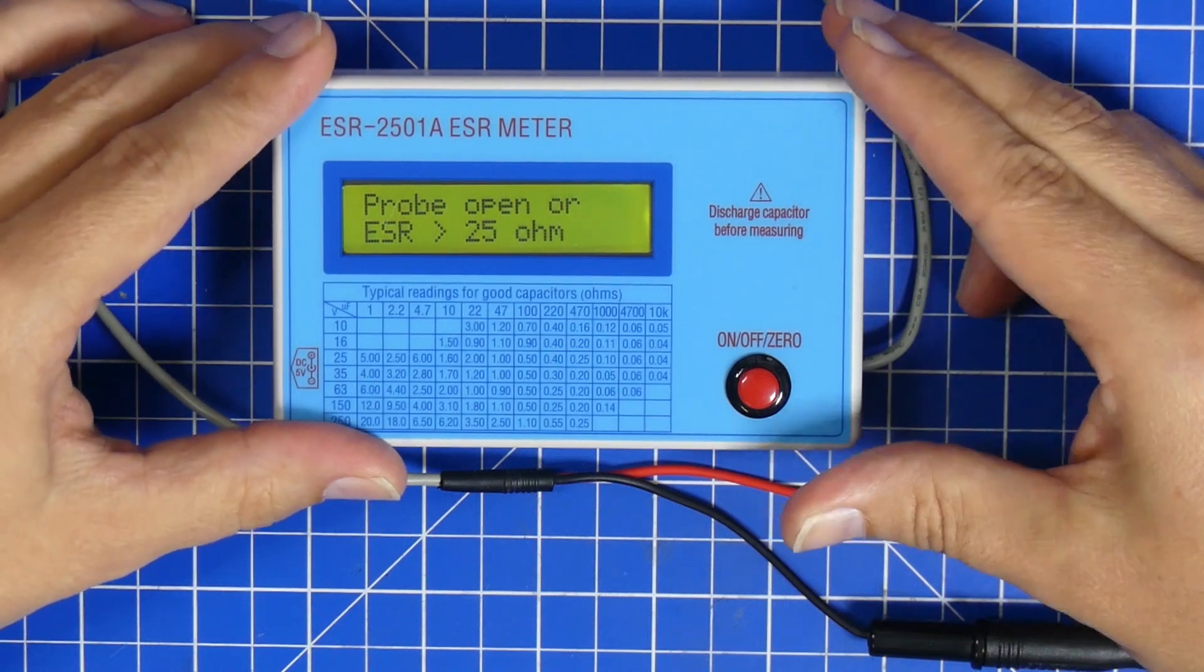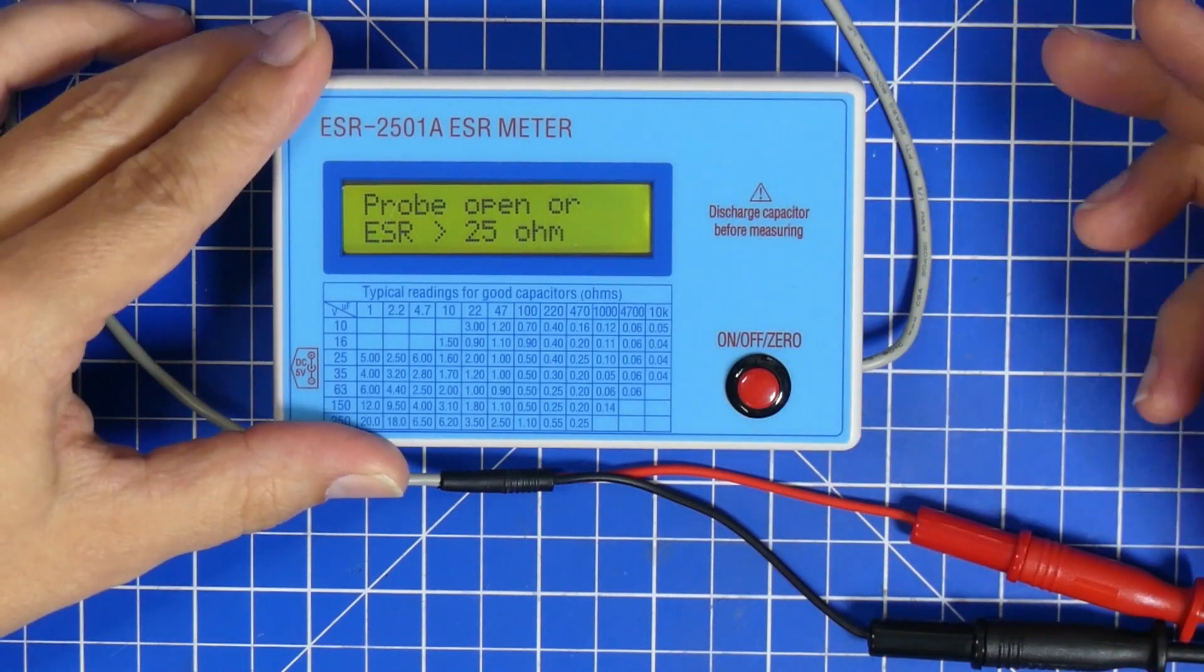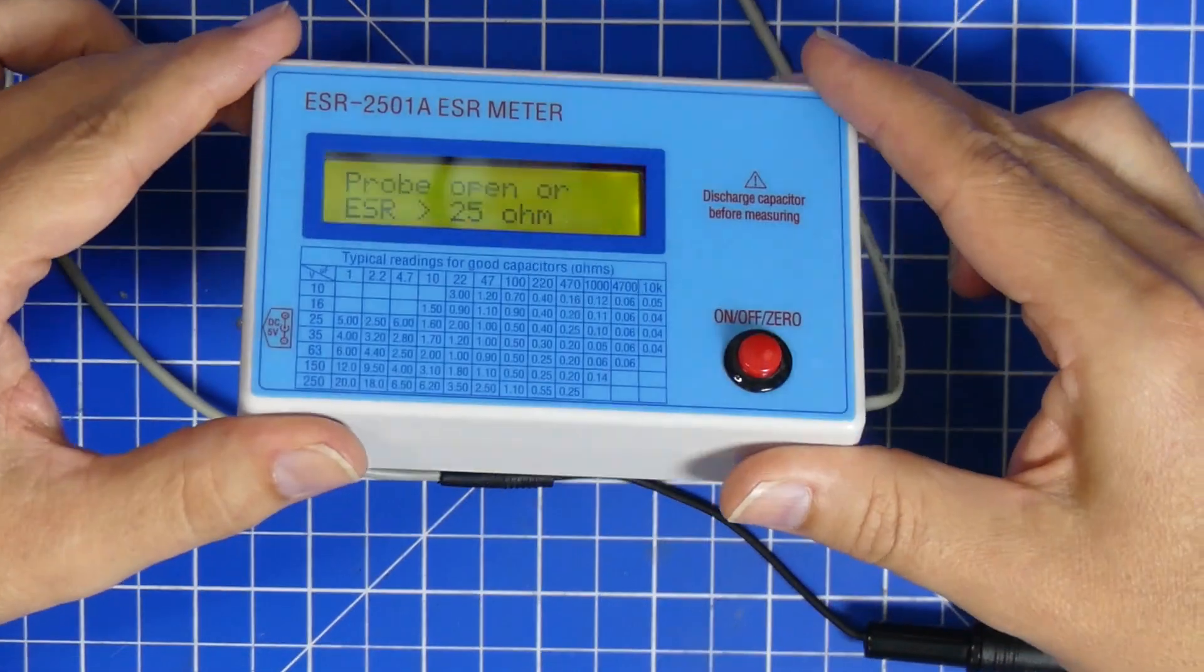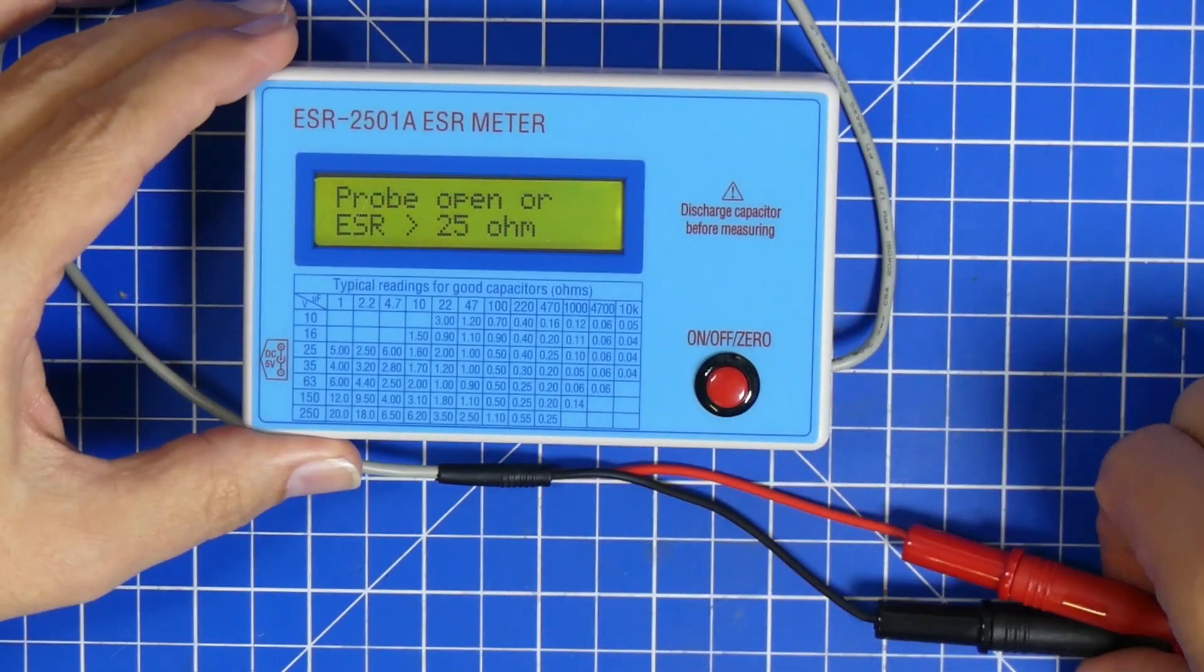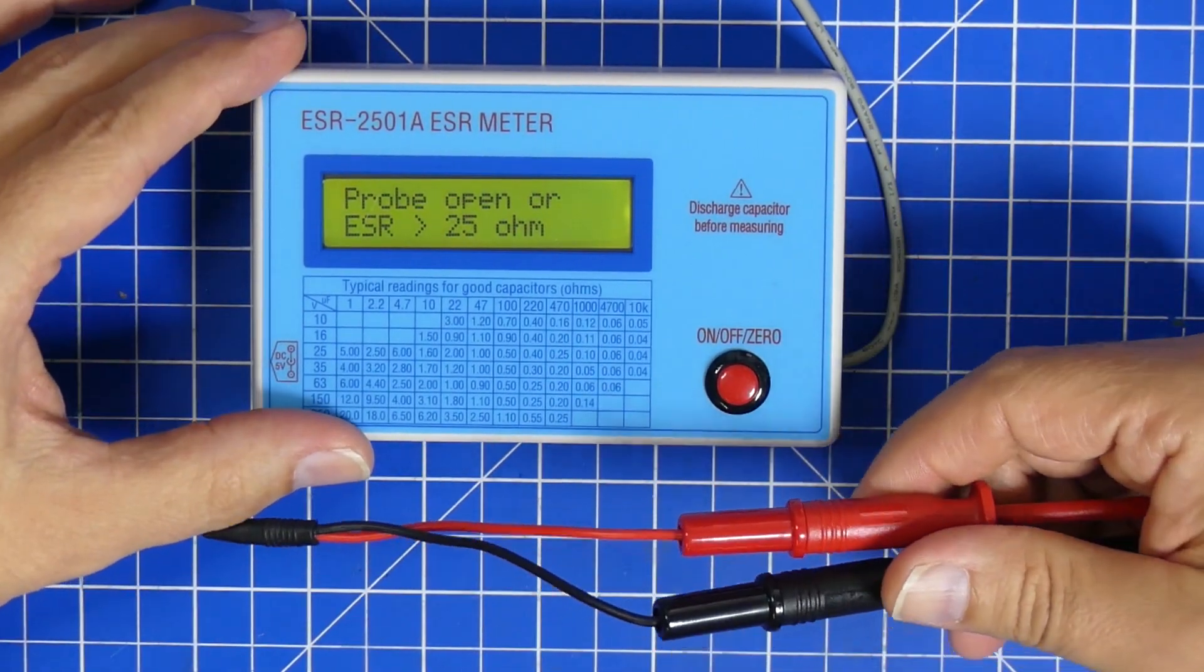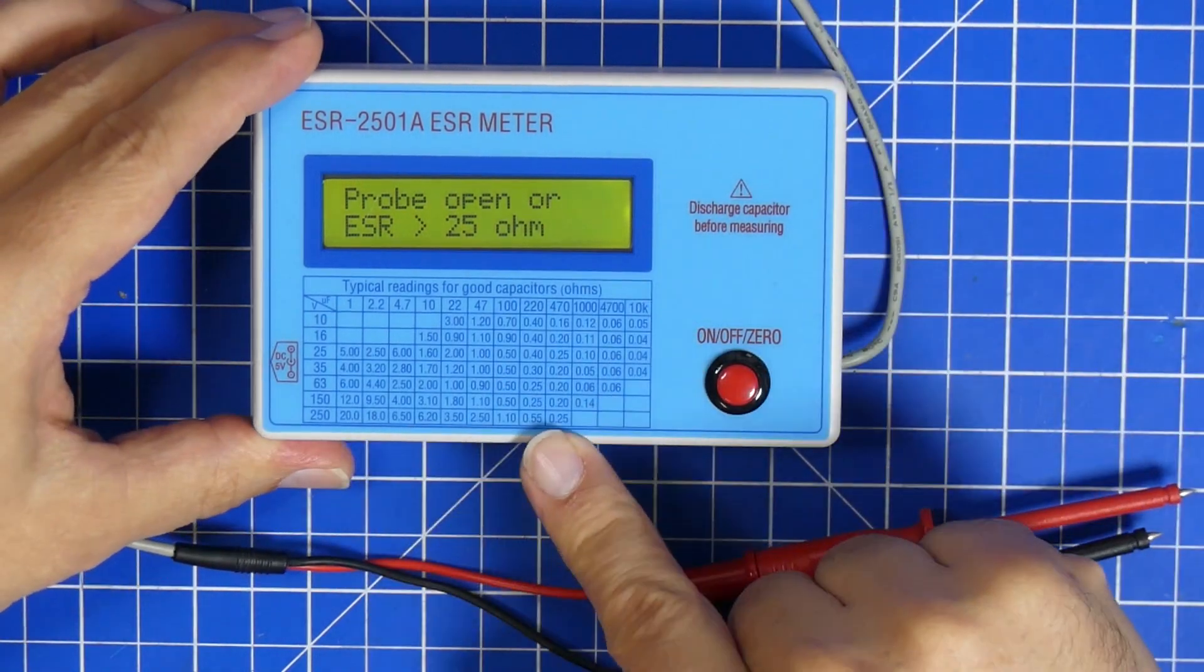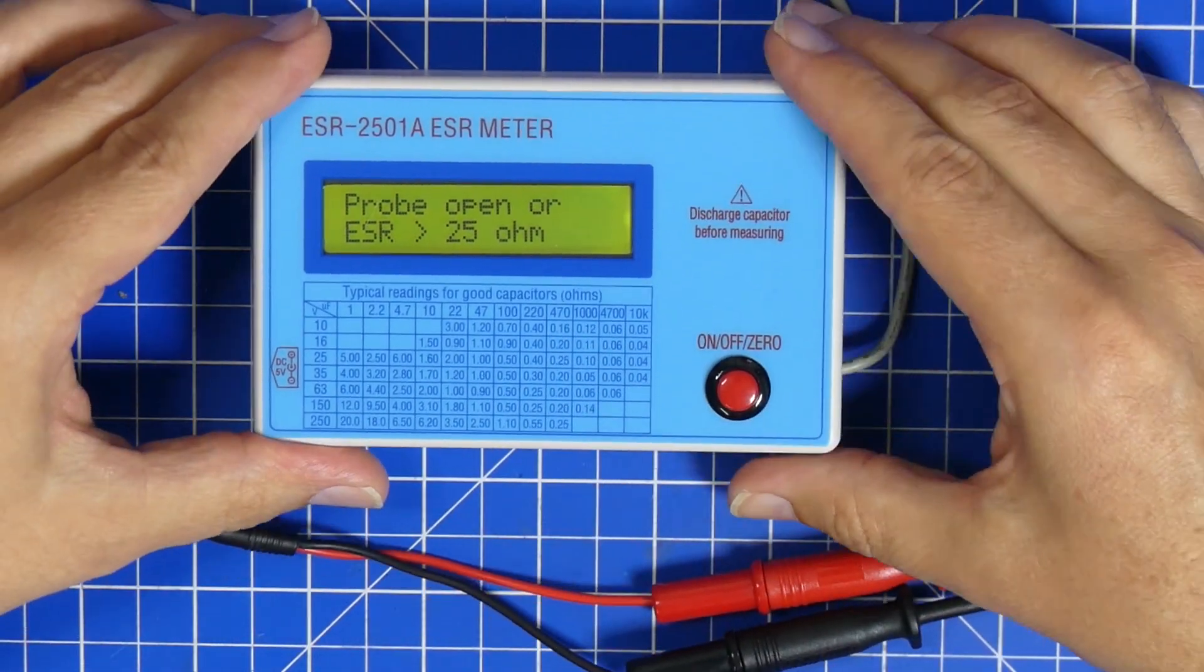You can either heat them up to get them going again and then cool them down and see them failing, or you can just have one of these and stick the probe across and it will tell you what the inline resistance of the capacitor is.